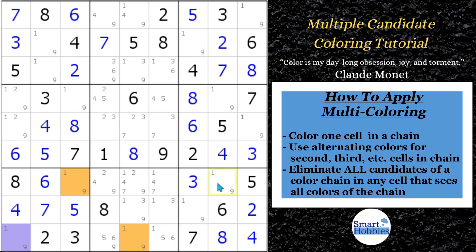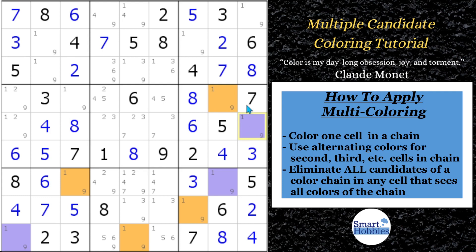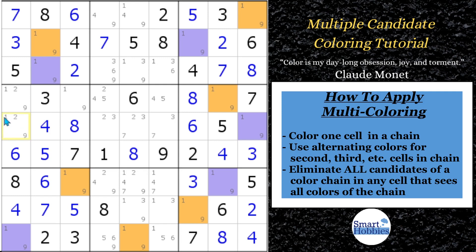We can go over here — there's another one-nine, so this would have to be purple. Now we can branch off: anything in the house that is the opposite, we can use. In this block, we can make that orange. We can make this orange. Then we come over here and make this a purple. We come up and make this an orange up here, alternating colors. We got an orange here and a purple there. Note: I didn't color this cell because it has an additional two in there, so we can't use that.